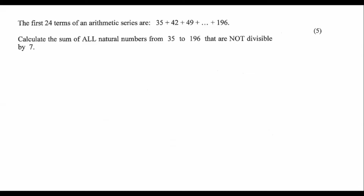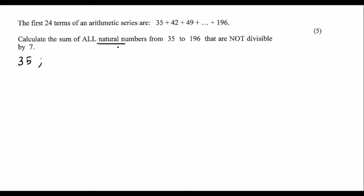Calculate the sum of all the natural numbers that are not divisible by seven. So that would be numbers like 35, 36, 37, 38, 39... Natural numbers are numbers that you count with. I'm just going to write a few numbers — don't worry, I'm not going all the way to 196.